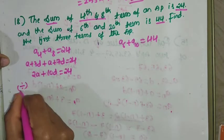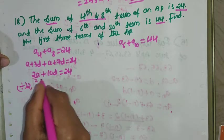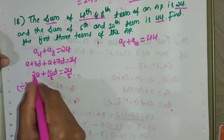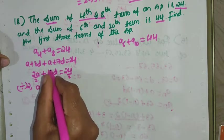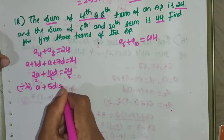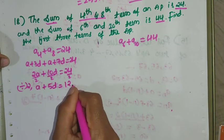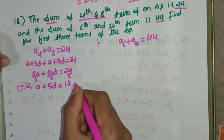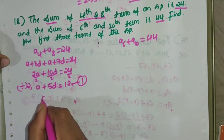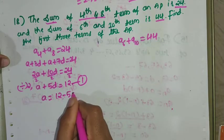Dividing the whole equation by 2 gives: A + 5D = 12. This is equation number 1, which can also be written as A = 12 - 5D.